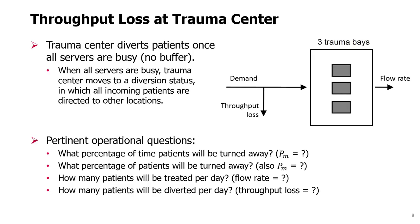Predicting throughput loss in a process with no buffer. A motivating example for this topic will be a trauma center in a hospital — the unit that receives patients in very serious conditions, patients who are in danger of dying and must receive help immediately or they could pass away.